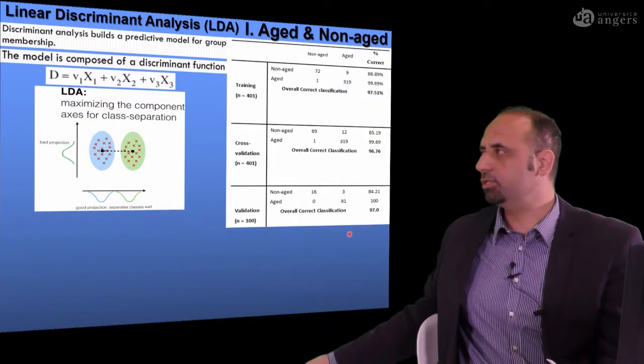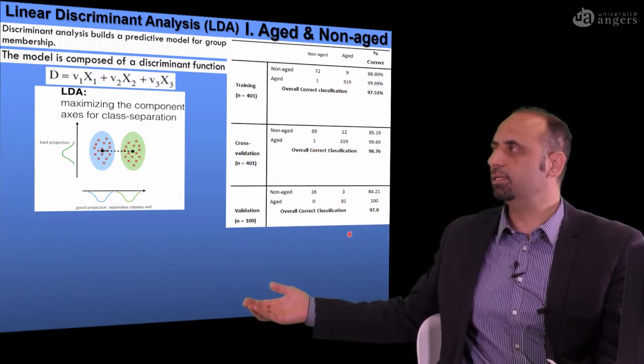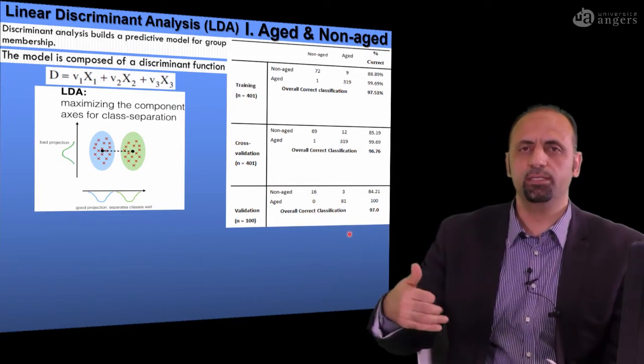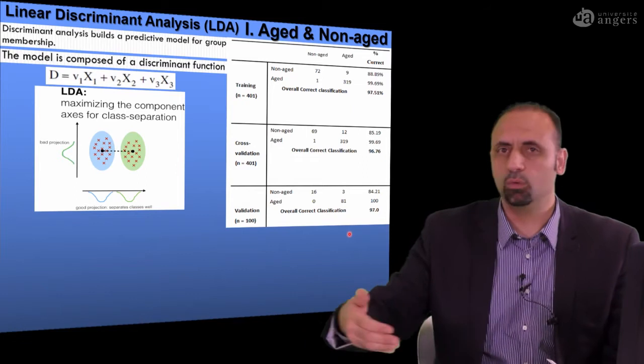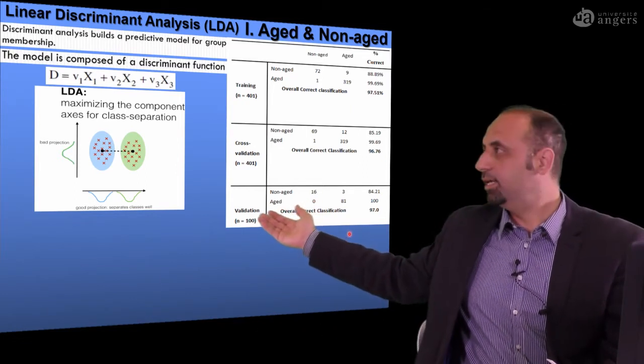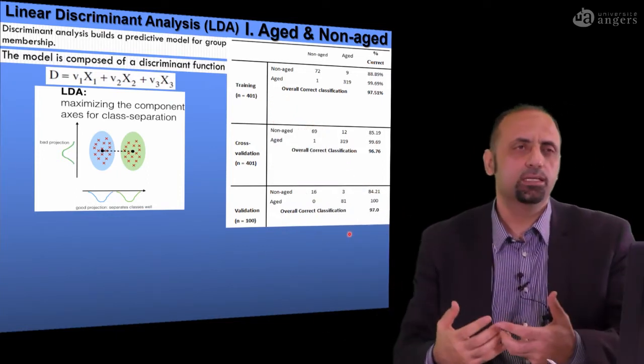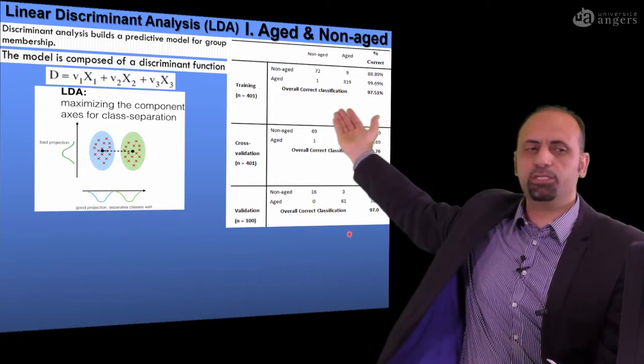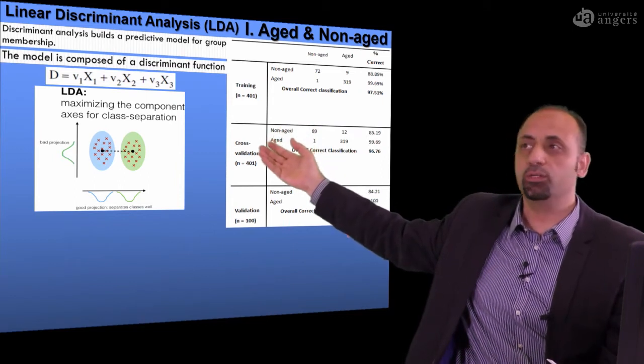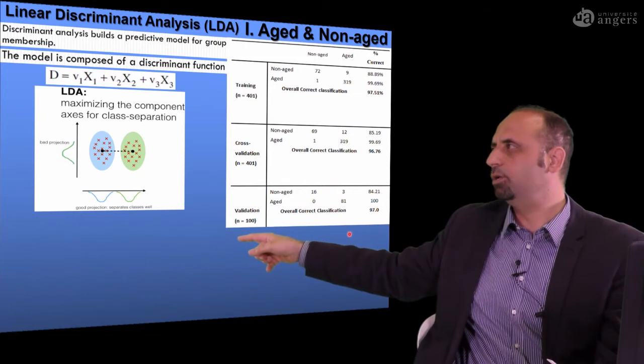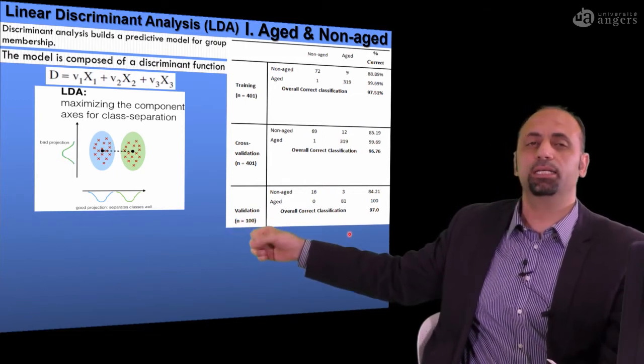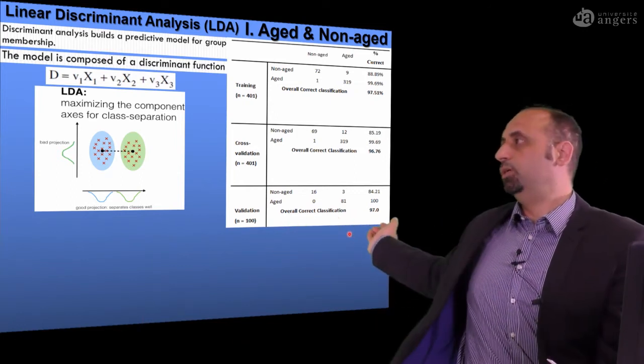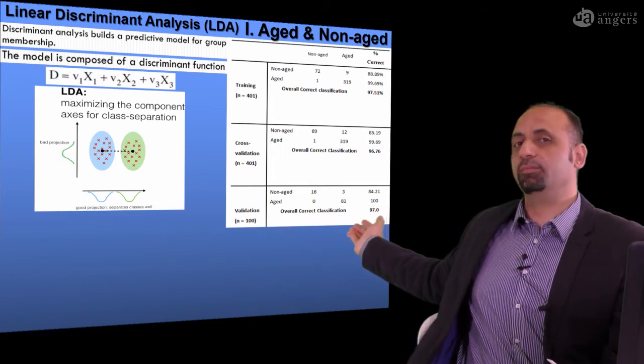This is a very simple model, called linear discriminant analysis model. To build this linear discriminant analysis model, you need to categorize your data to different categories like aged, non-aged, germinated, non-germinated, or normal or abnormal. This is the first results of our data. If you need to predict whether this seed is aged or non-aged, the model we developed has a high percentage of accuracy, 97.5% accuracy in the training set. But usually, I advise you to look for validation set, because it's much better to avoid some problems during the development of the model, like overfitting or underfitting. The quality of the model is 97% correct classification.